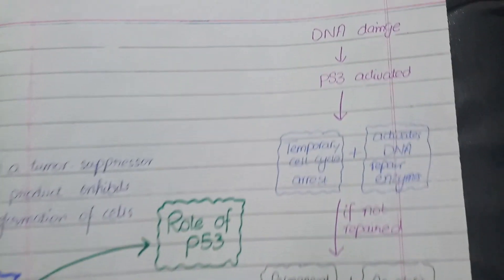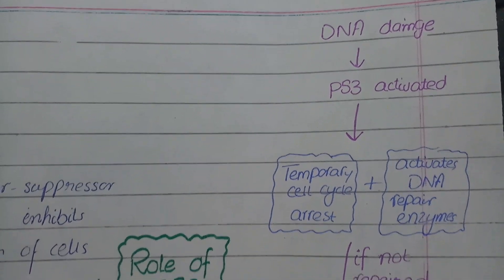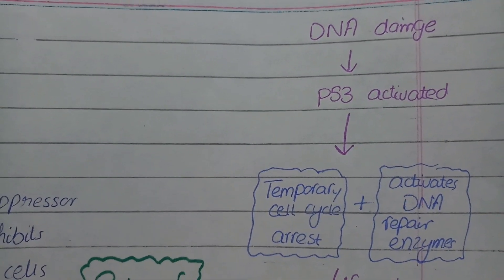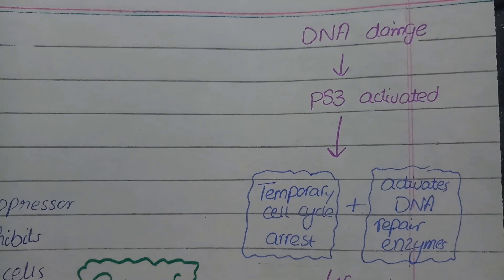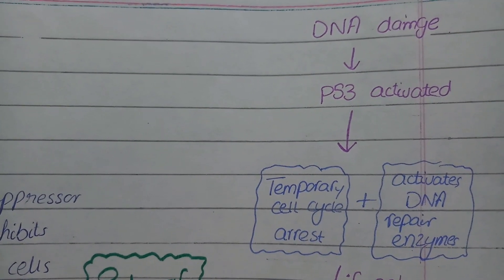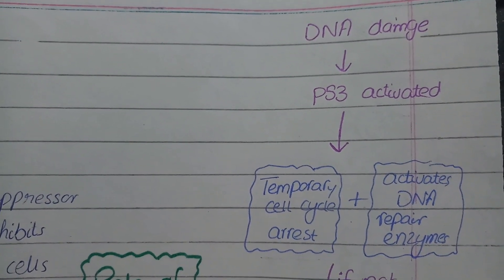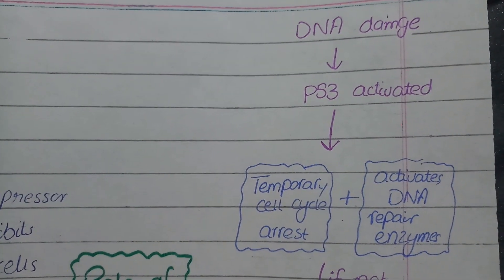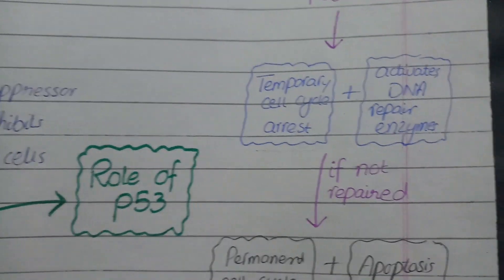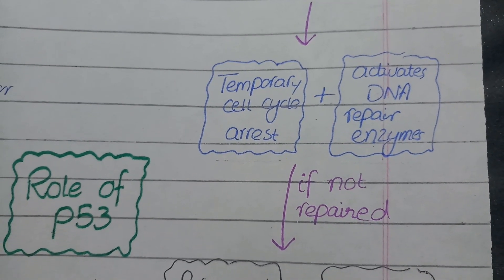The initial event which stimulates p53 to work is DNA damage. Whenever the DNA gets damaged due to radiation or any physical factor, this p53 protein is activated and it tries to limit the damage to the genome. For this purpose, the p53 protein plays two important strategies. The first strategy is that it induces the activation of DNA repair enzymes and meanwhile puts a temporary arrest on the cell cycle.